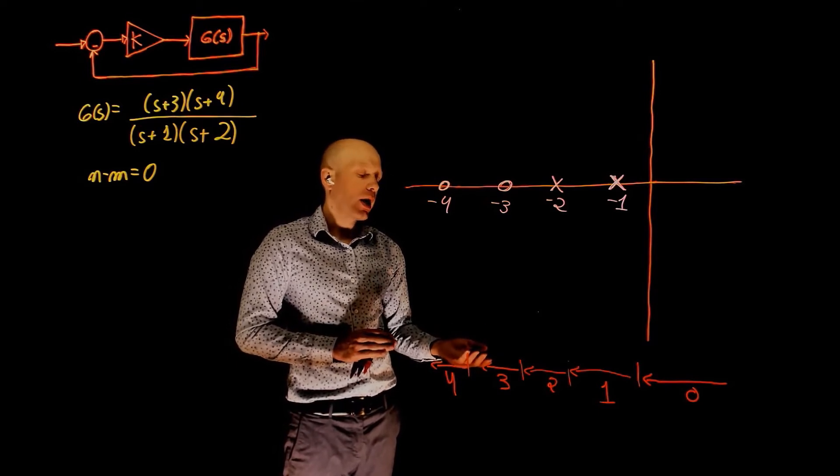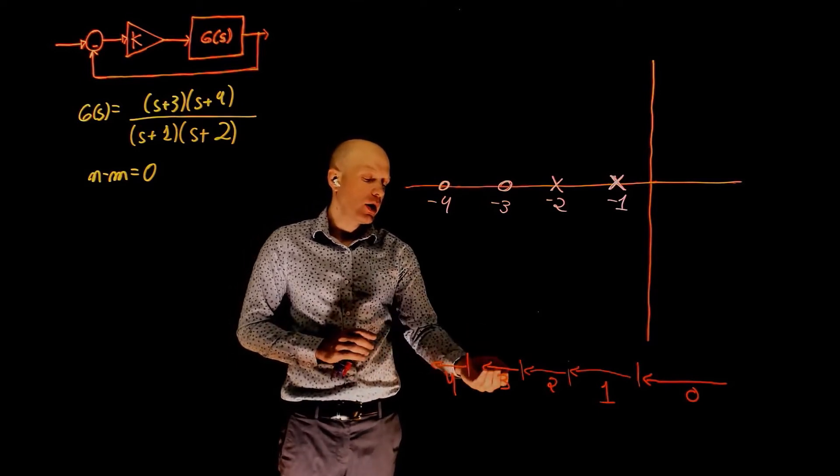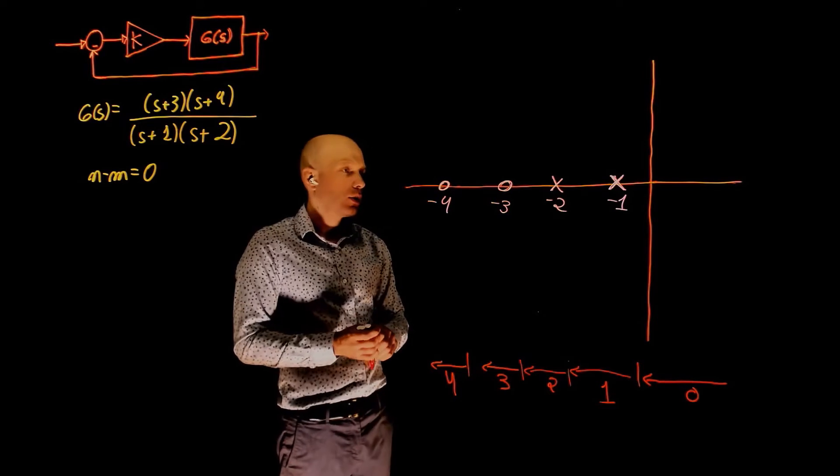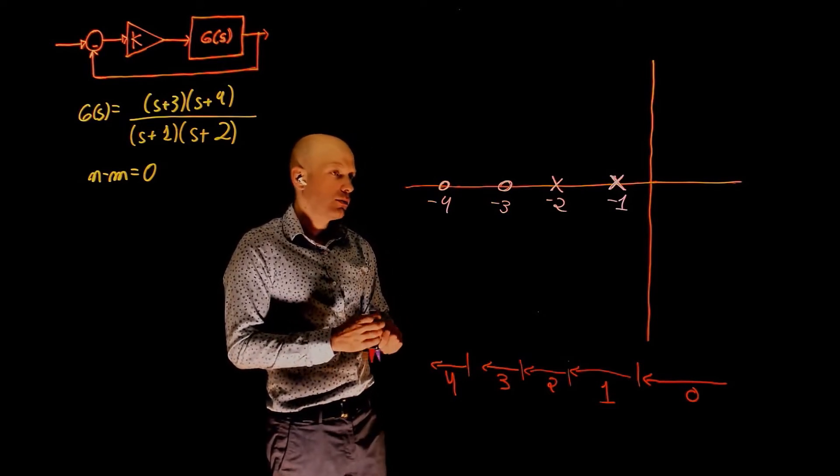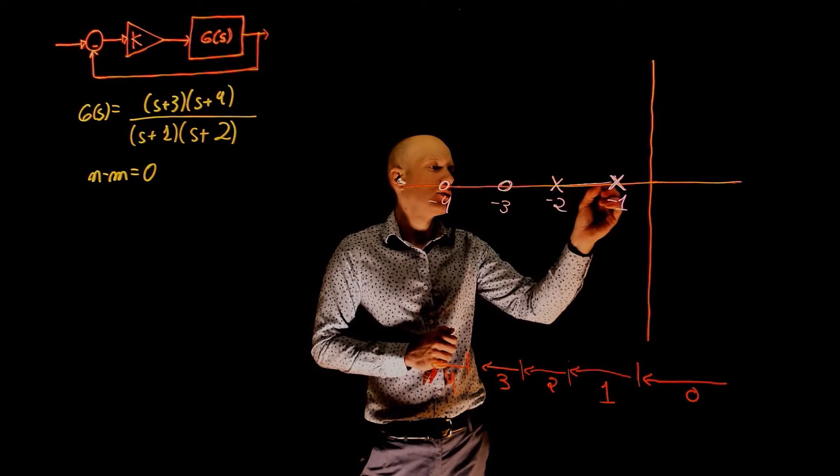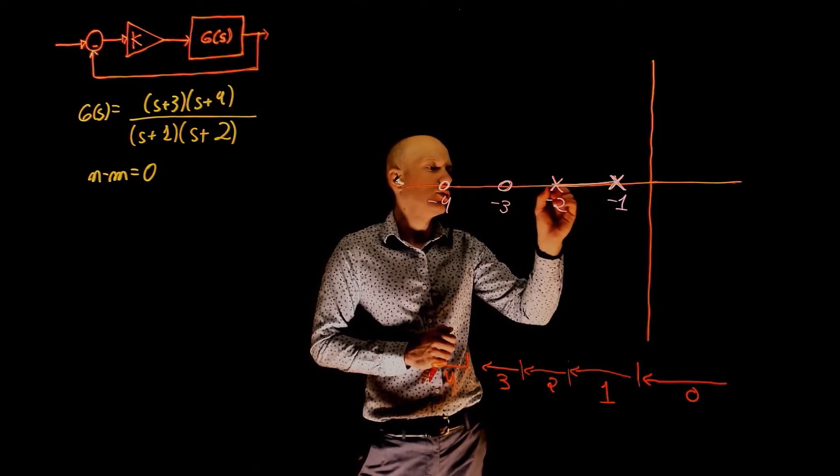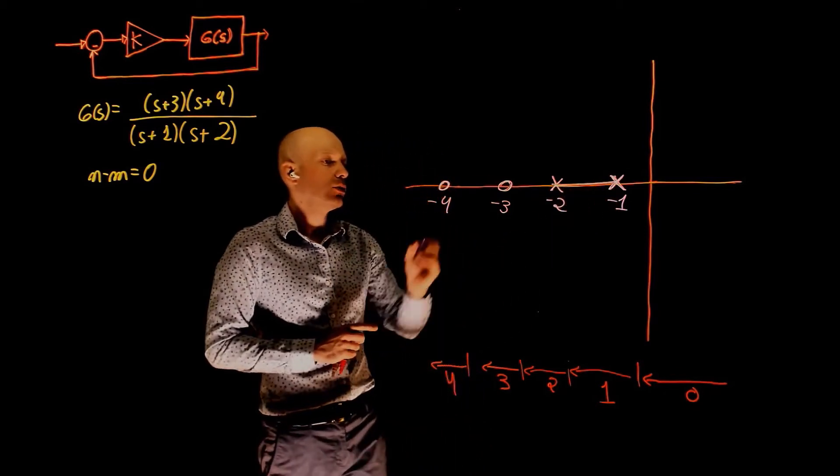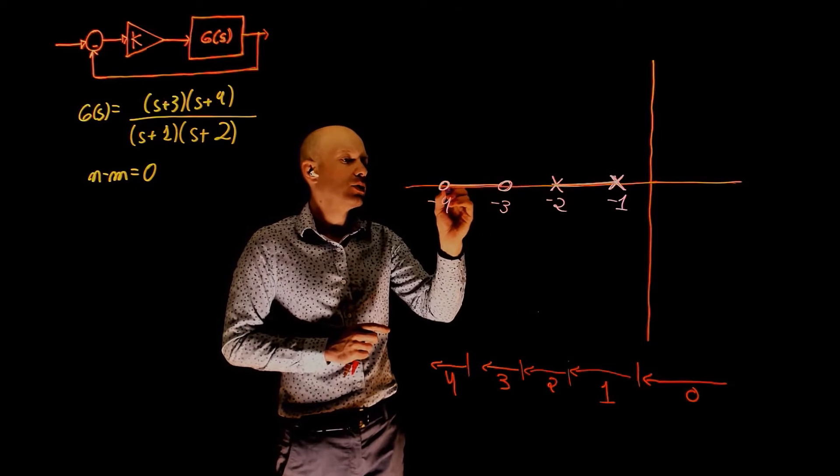The segments of the real axis that have an odd number now are 3 and 1. So those are between the poles and between the zeros. So the root locus exists between these two poles and also exists between these two zeros.